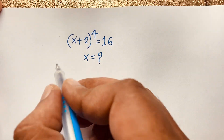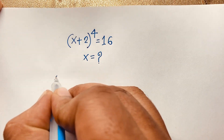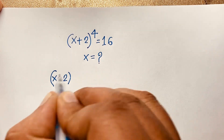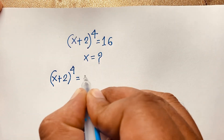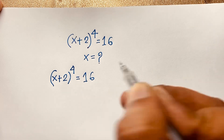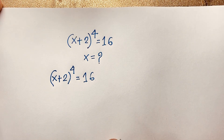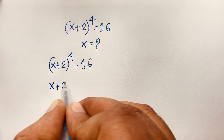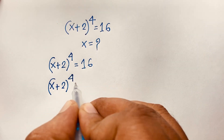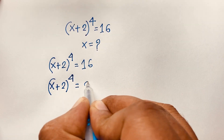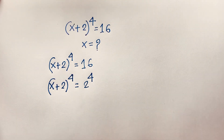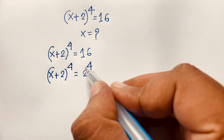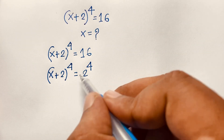So first, our equation is: x plus 2, whole to the power 4, equals 16. We can write 16 as 2 to the power 4. Then we can cancel the exponent 4 on both sides, and we find x is equal to 0.